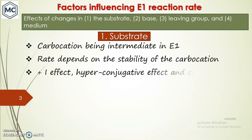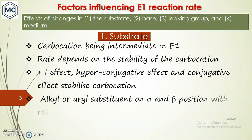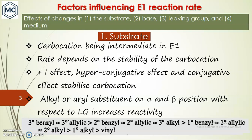There are electronic effects like the +I effect, hyperconjugative effect, and conjugative effect, which are factors that stabilize a carbocation. When you have an alkyl or aryl substituent on the alpha and beta positions with respect to the leaving group, reactivity increases. The order will be: tertiary alkyl halide is more stable than secondary, which is more stable than primary. Tertiary benzyl stability is almost equal to tertiary alkyl.